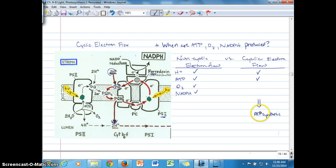The type of ATP synthesis that occurs from cyclic electron flow we refer to as cyclic photophosphorylation. The type of ATP synthesis that occurs as a result of non-cyclic electron flow is referred to as linear or non-cyclic photophosphorylation. Make sure you're familiar with this terminology.